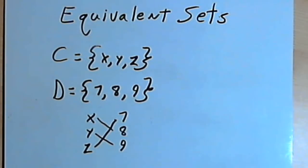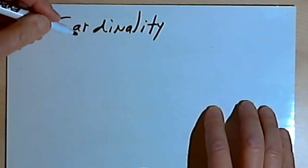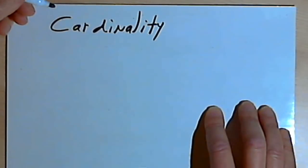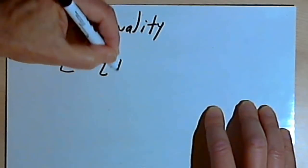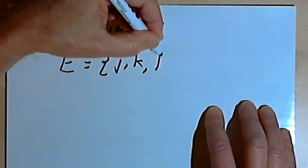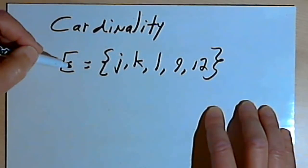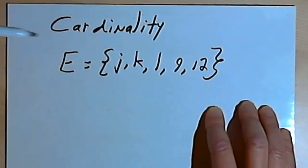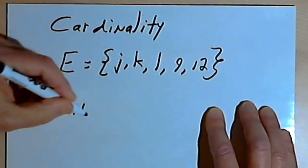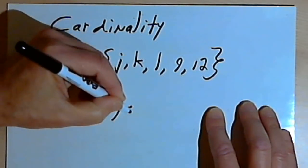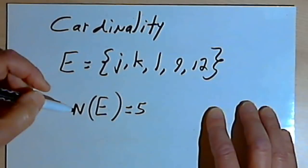Now, since we're dealing with the number of elements in sets — that's how we decide whether a set is equivalent to another one — we have a term we use. The term is cardinality. The cardinality of a set is just the number of elements in that set. So if I have set E, and set E consists of J, K, A, L, 9, and 12, I can say that the cardinality of set E is 5, because there are 5 elements in set E. And if I want to write that, I'm going to use a small n, and then in parentheses I'll put set E, and I'll write equals 5. This is read as the cardinality of set E is 5, or you could just say the number of elements in set E is 5.